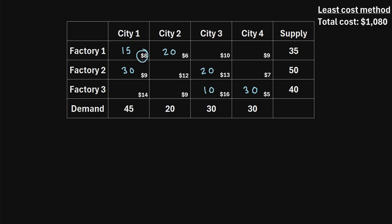I've listed the shipping costs from each factory to each city in the bottom right-hand corner of each cell. Now to come up with an initial basic feasible solution to this transportation problem, you can use the least cost method, the northwest corner method, or Vogel's approximation method. I've made a video on each of those three methods and I'll link to them in the description. For this example, let's assume that we used the least cost method to come up with an initial basic feasible solution.